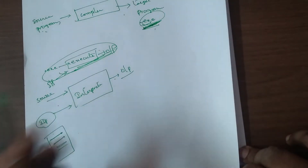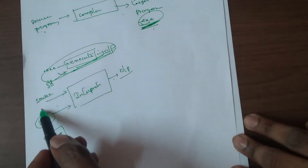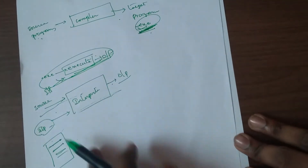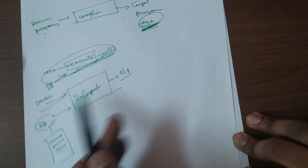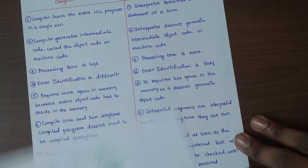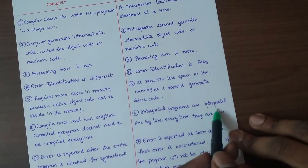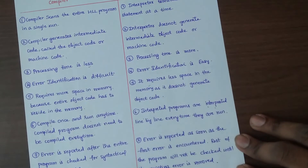With an interpreter, it must interpret the program every time it is run. There is no saved object file, so the interpreter translates and executes the program line by line each time it is run.